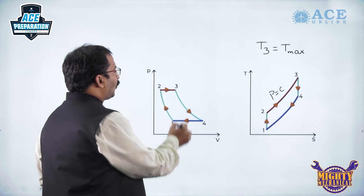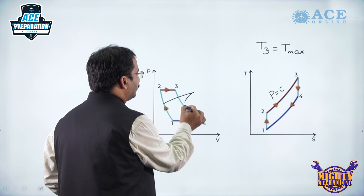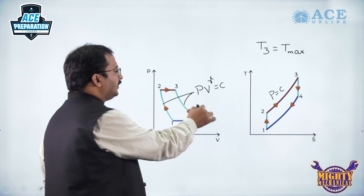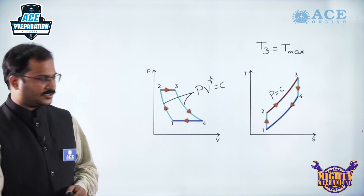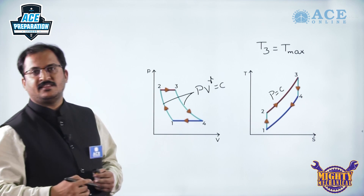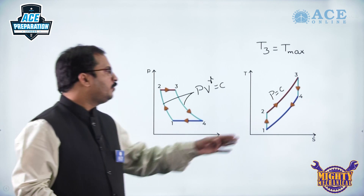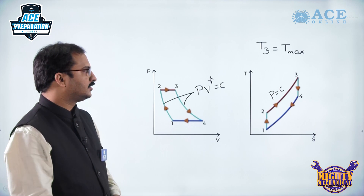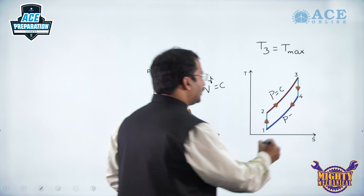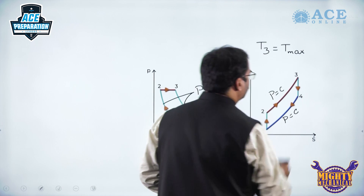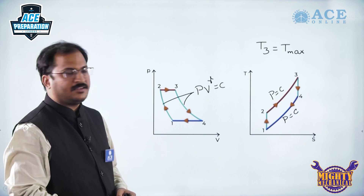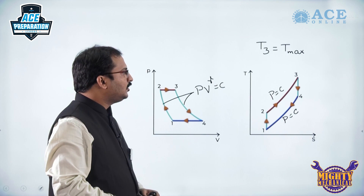Process 3 to 4 is isentropic expansion. During expansion the volume is increasing and pressure is decreasing, and at the same time temperature decreases because there is a decline in pressure, and entropy remains constant during this expansion process. Process 4 to 1 is constant pressure heat rejection, and this is the minimum pressure of the cycle, so P4 is equal to P1.